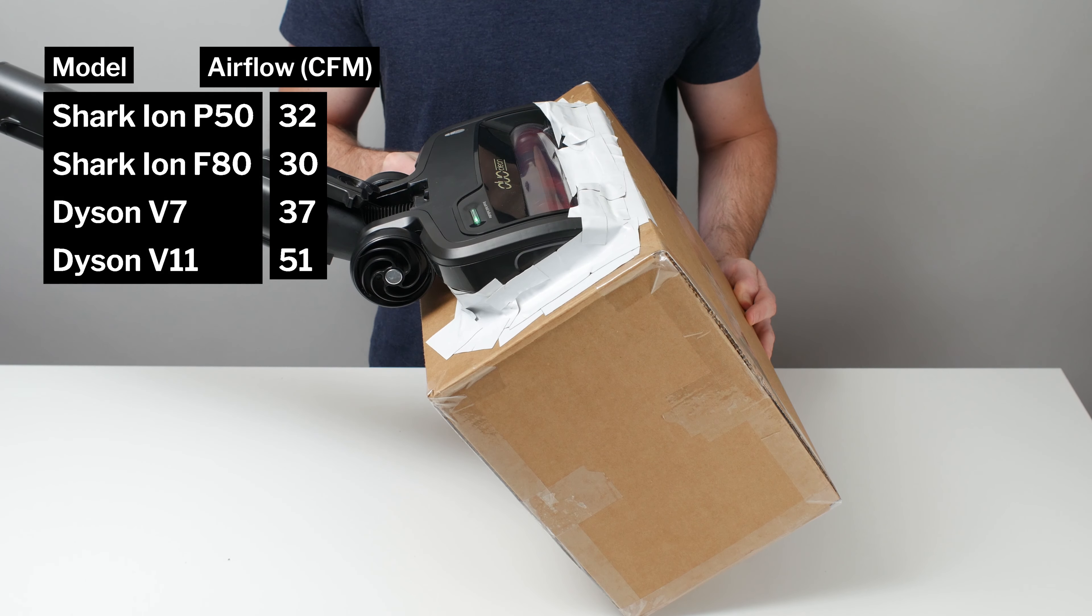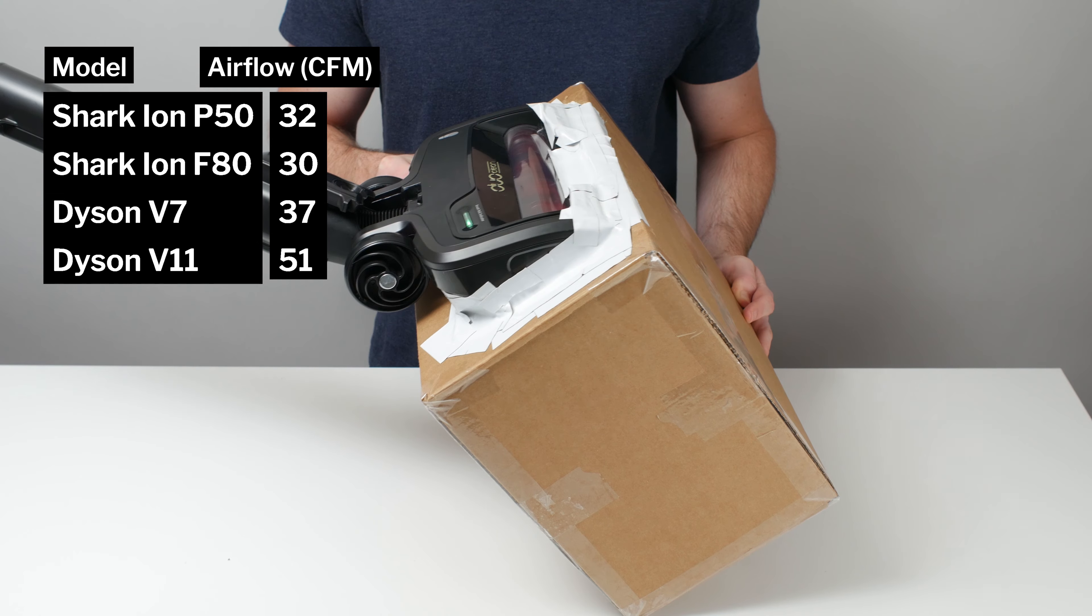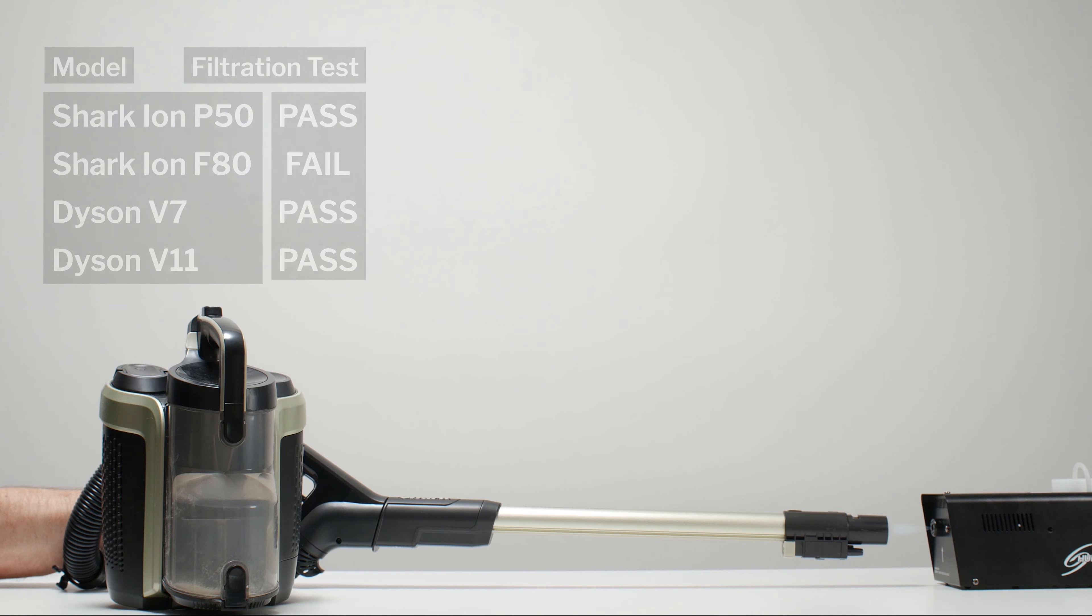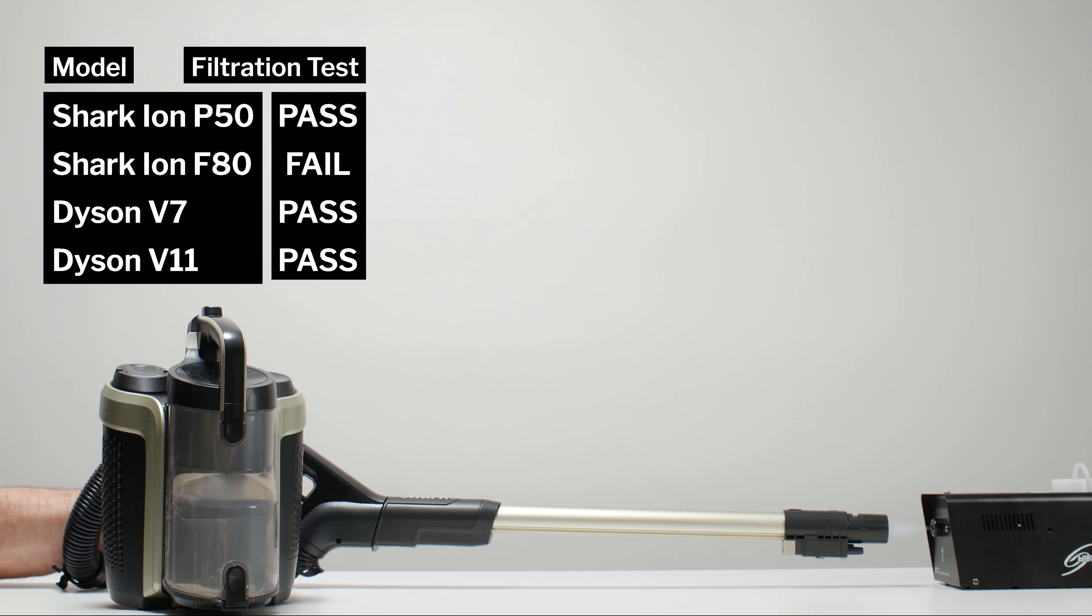This is a review for the Shark Ion P50. The P50's airflow was measured at 32 CFM, and its suction was measured at 78 inches of water lift. The P50 easily passed our filtration and sealing test, largely because of its HEPA post-motor filter.